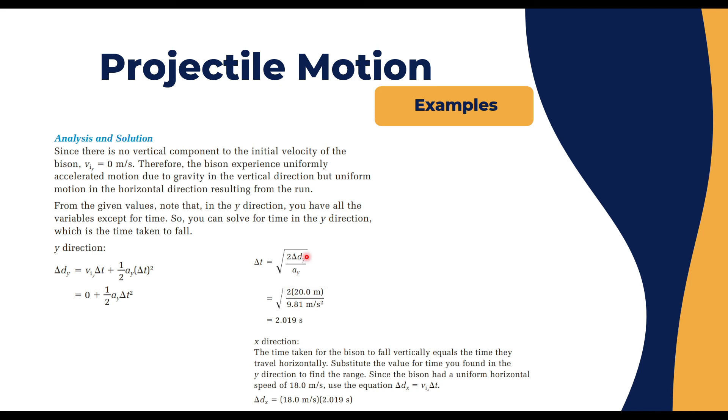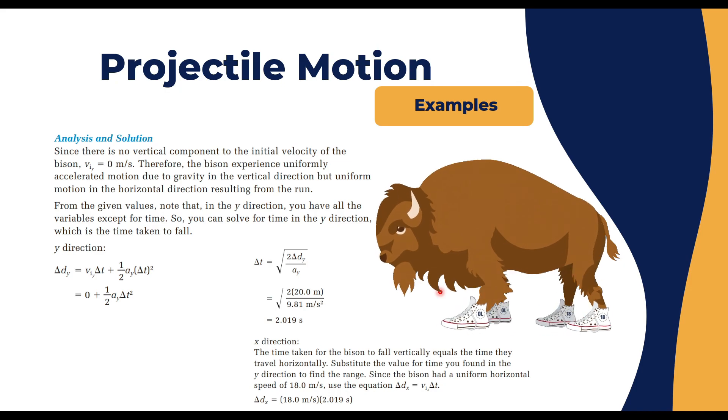How do we find Δd_x? Δd_x is v_ix times Δt. We have v_ix, 18 m/s, times Δt, which is common for both x and y. That gives you the range: how far did the bison land from the initial point? 36.3 meters. That was the range of the sad story of the depressed bison.